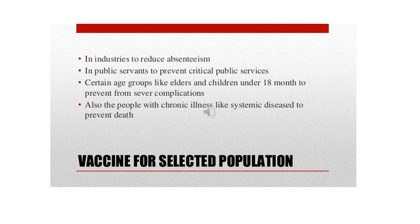Since influenza vaccines will not control epidemics, they are recommended only in certain population groups — for example, in industries to reduce absenteeism, in public servants to prevent disruption of critical public services, in certain age groups like elderly and children under 18 months to prevent severe complications, and in people with chronic illnesses and systemic diseases to prevent mortality.